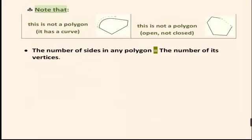If I look at these shapes, is this one a polygon? You might think it's closed, yes, but it's not a polygon because it has a curve. I have to make sure I have two conditions: first, the shape must be closed, and second, it must not have any curves. This one is closed but has a curve, so it's not a polygon.